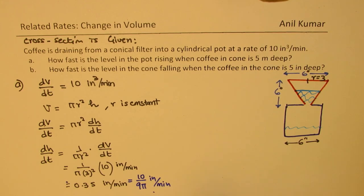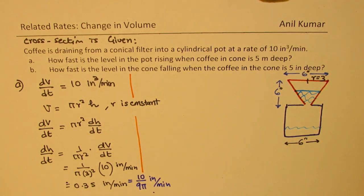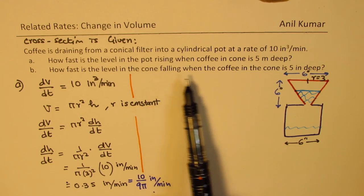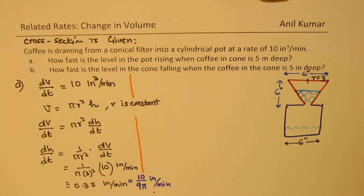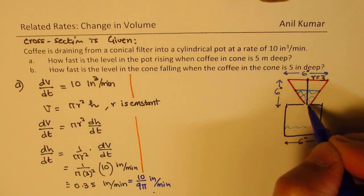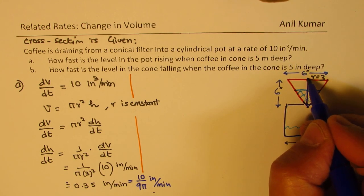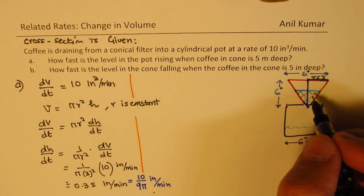Okay, now let's do part B of this particular question. How fast is the level in the cone falling when the coffee in the cone is 5 inches deep? Now in the case of a cone, both radius and height change. So we are now seeing that the radius and the height will change.